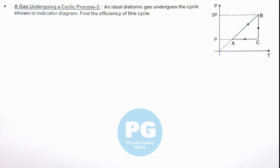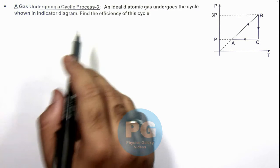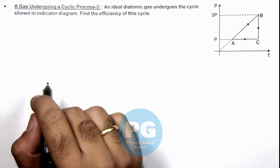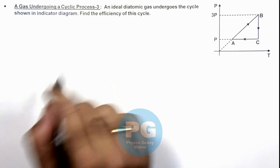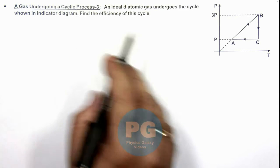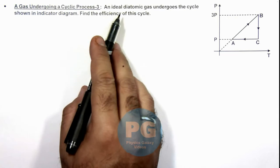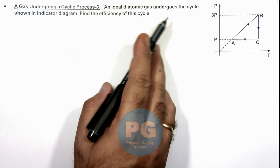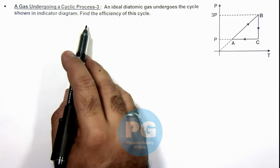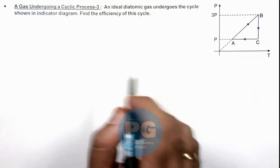In this illustration we'll discuss the case 3 of a gas undergoing a cyclic process. This is a different case compared to the previous two. Here we are given that an ideal diatomic gas undergoes the cycle shown in the indicator diagram. We are required to find the efficiency of this cycle.